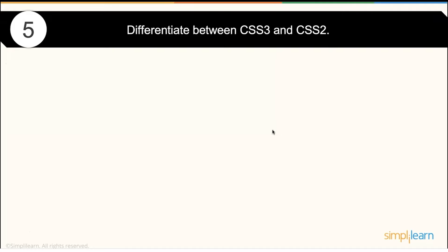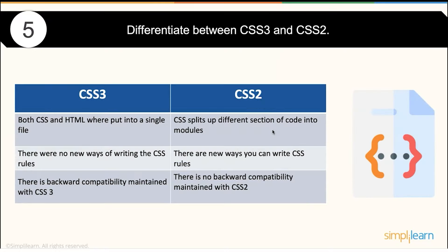What is the difference between CSS3 and CSS2? CSS has changed a lot — CSS3 brought many new features. In CSS2, the code is split into different sections; in CSS3, both CSS and HTML were put into a single file. CSS3 introduced new ways of writing CSS rules. Additionally, CSS3 maintains backward compatibility, whereas CSS2 does not have backward compatibility.